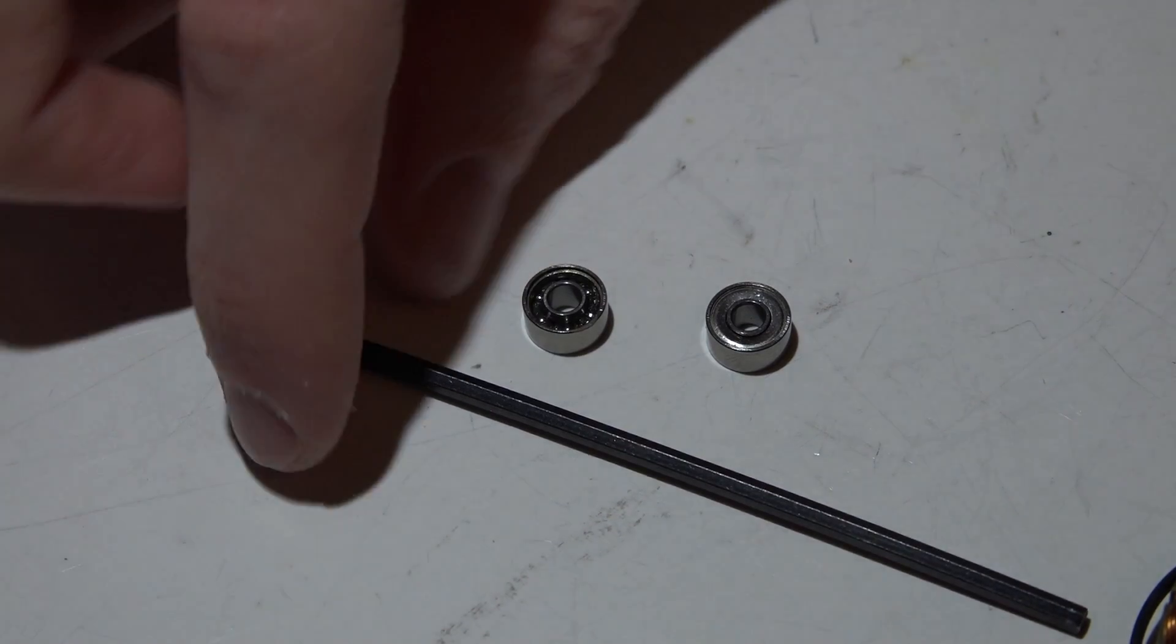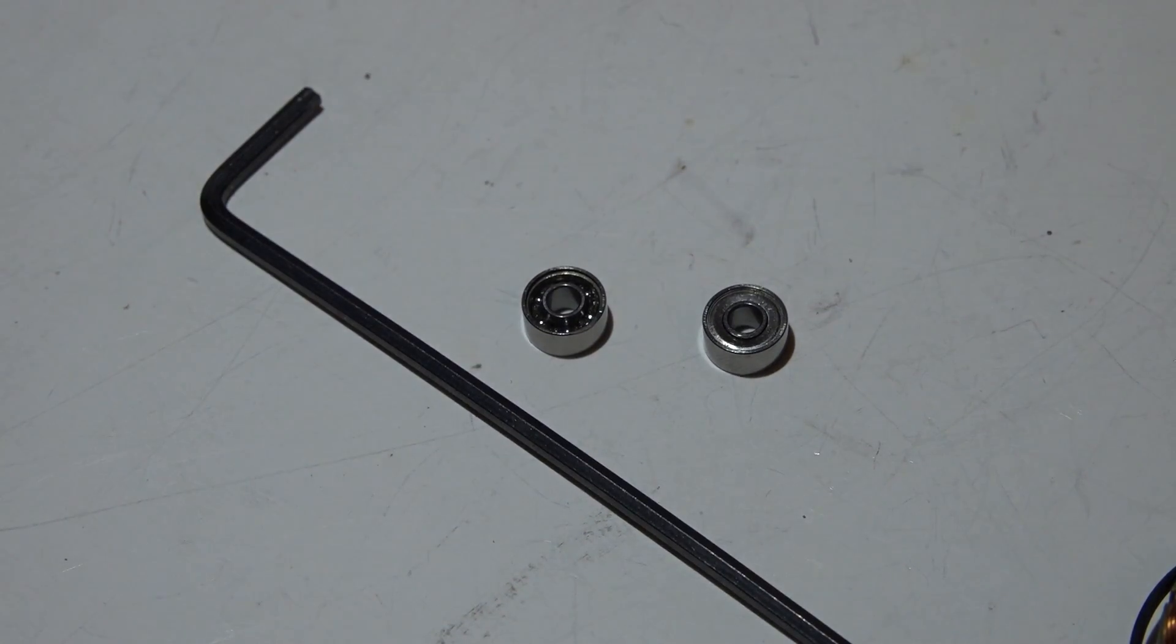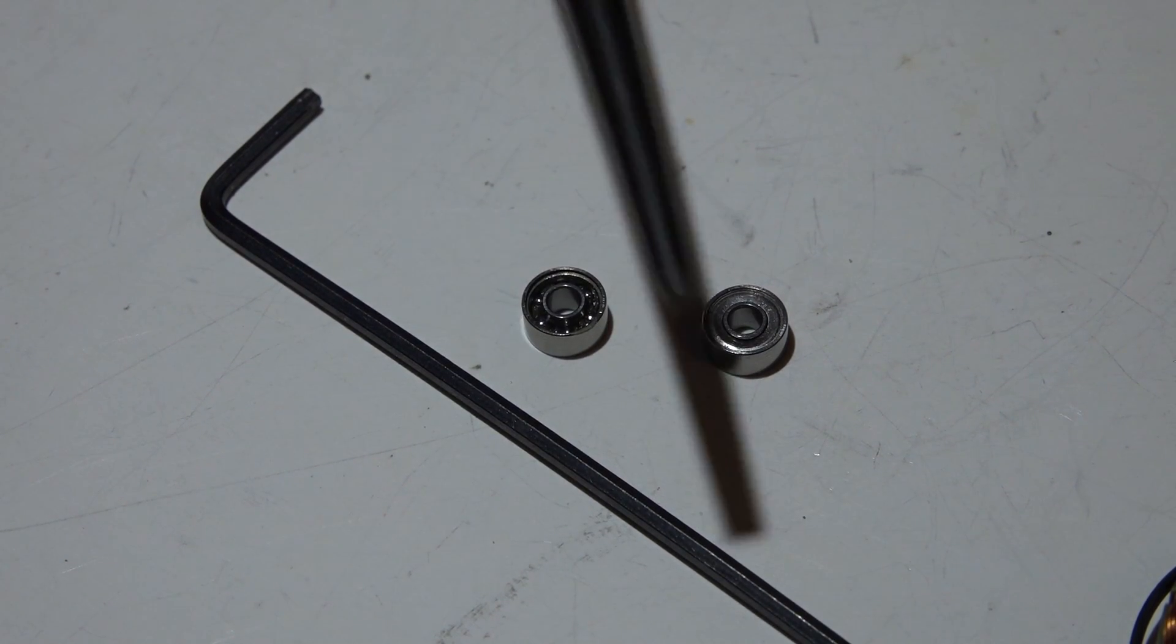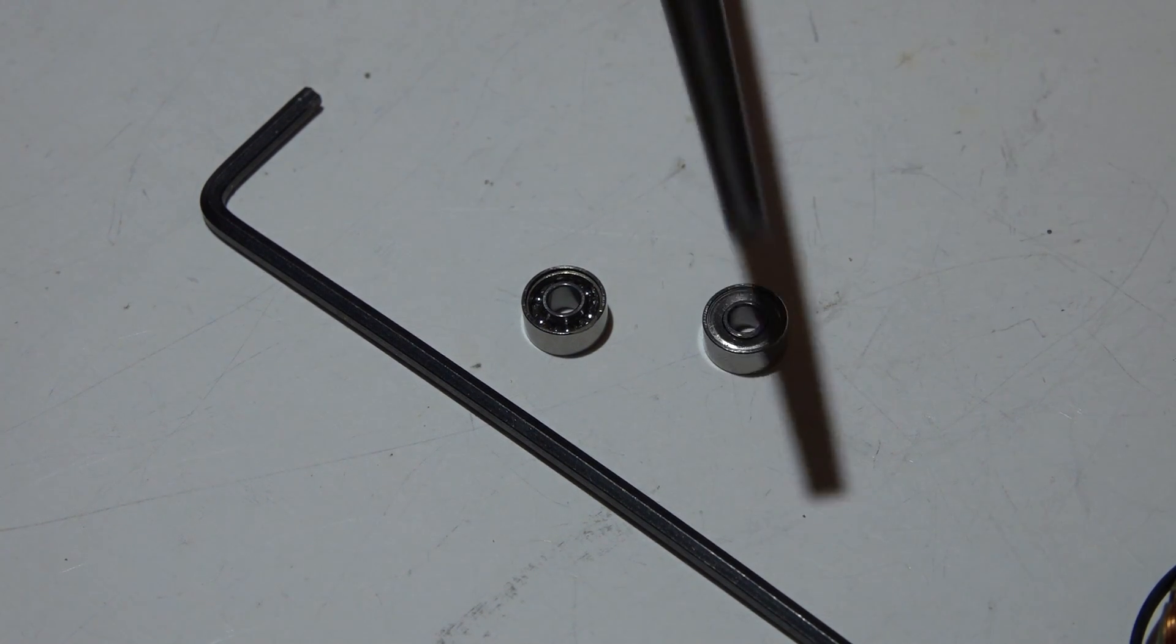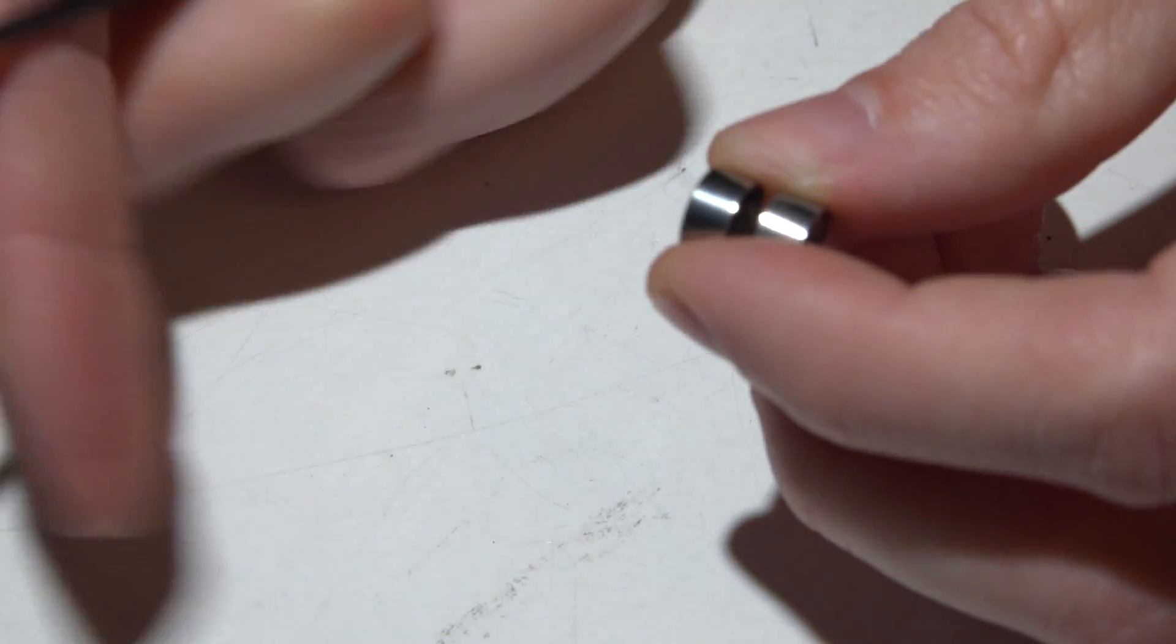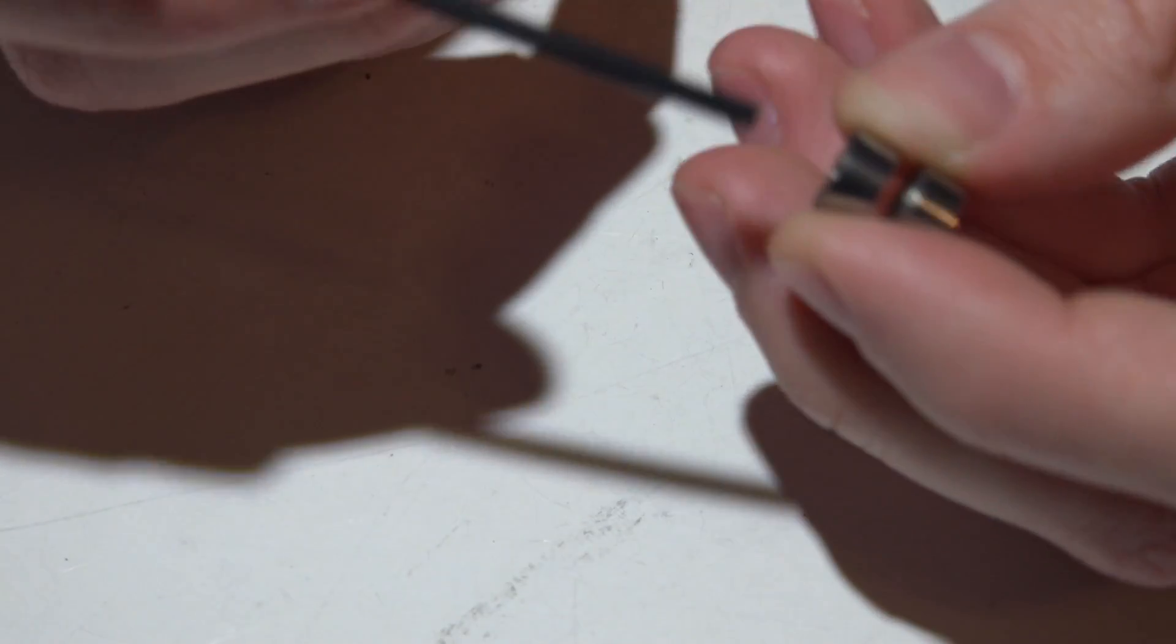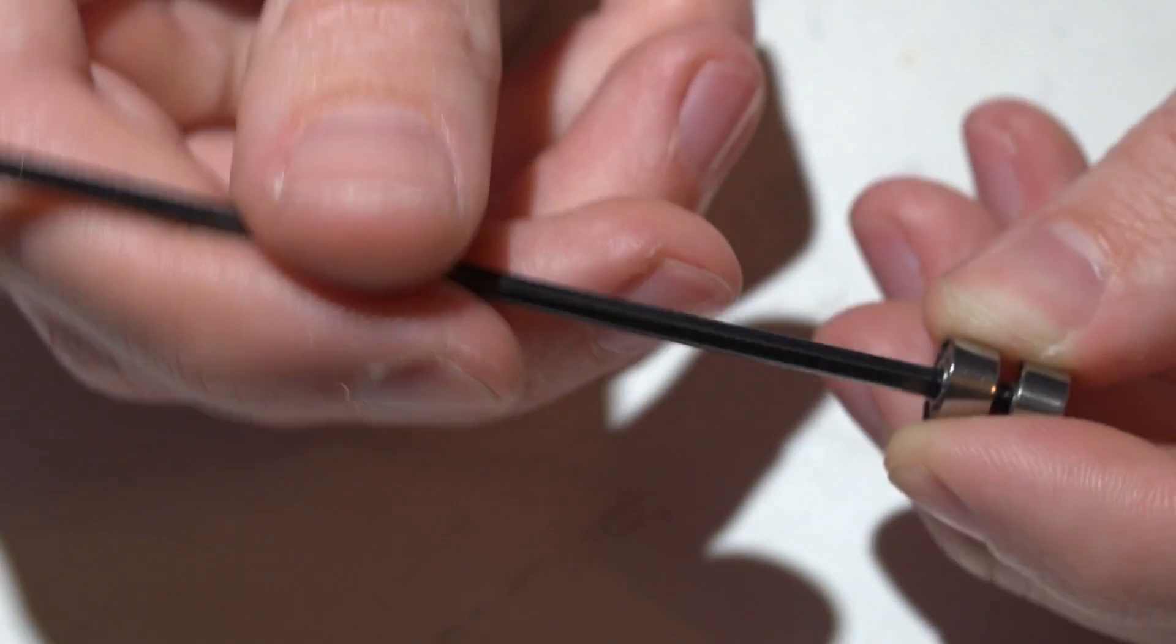How I do this is I just take an Allen wrench that I don't really care about - I don't care if the end gets messed up, it's just a junk Allen wrench. Or the even better choice would be a punch. I would be using a punch but this one's too big and I don't have the right size right now.